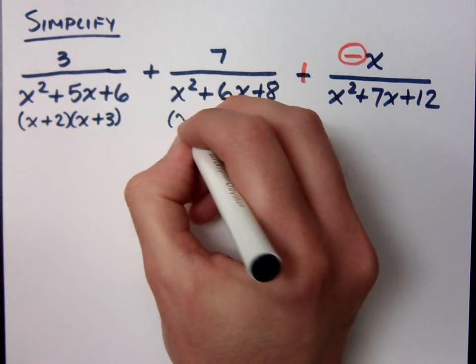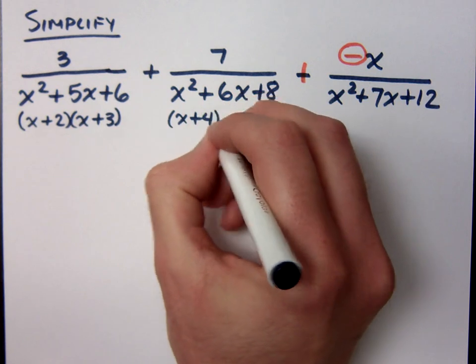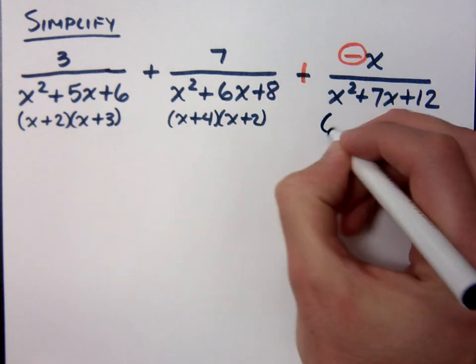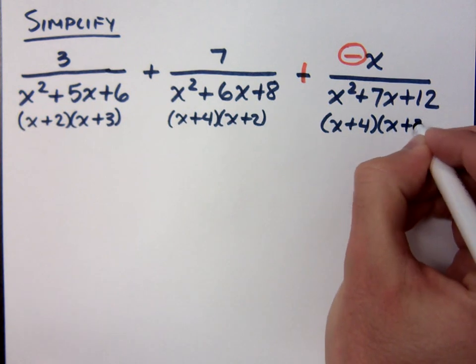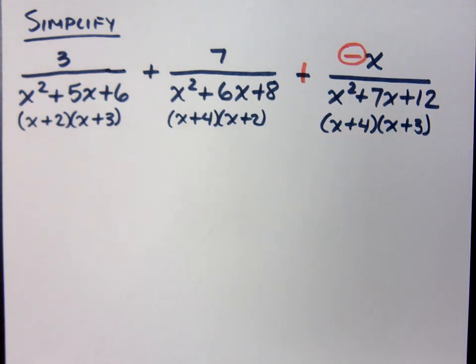What did you get for the second guy? x plus 4, x plus 2. What about the last denominator? x plus 4, x plus 3. It's almost too easy, isn't it? Although if you get one of these signs wrong or one of these numbers wrong, you're in deep trouble.